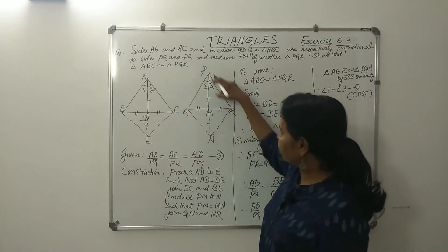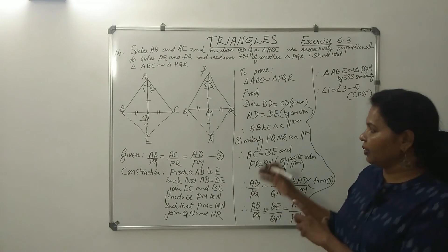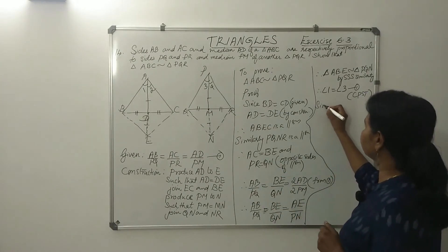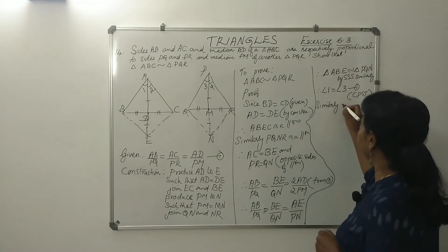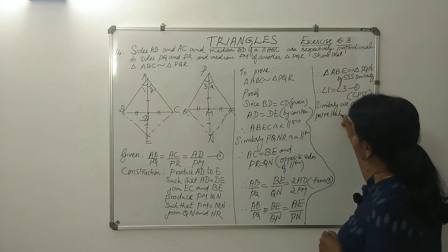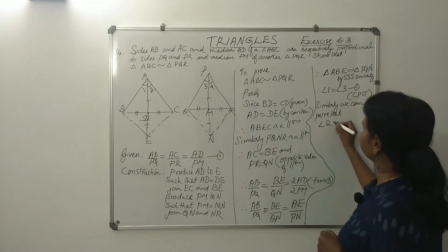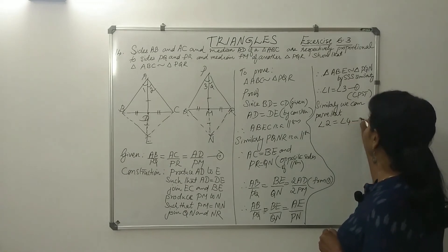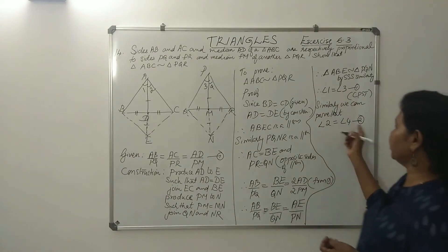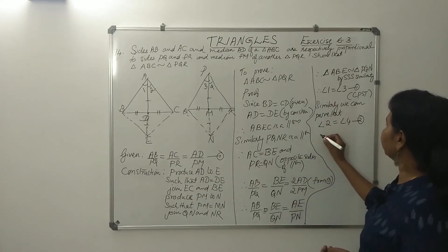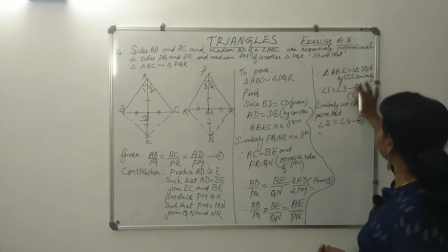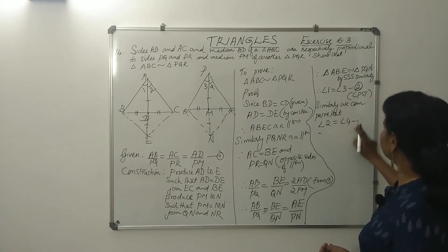Similarly, we can prove that angle 2 equal to angle 4 — equation number 2. So angle 1 equal to angle 3, and angle 2 equal to angle 4. Now, add these two equations. Equation 2 plus equation 3, we get angle 1 plus angle 2 equal to angle 3 plus angle 4.